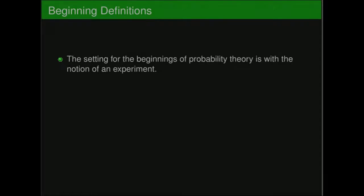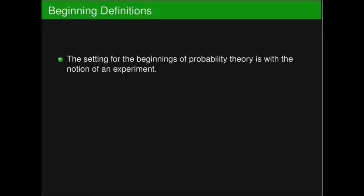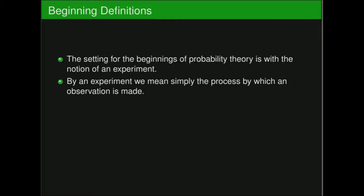The beginnings of probability theory have to do with the notion of an experiment. By an experiment, we mean a process by which an observation is made. Typically, this may be some kind of numerical value, something as simple as watching certain signals go by, or looking at a string of letters going across the page — so really being an experiment where we're making observations.